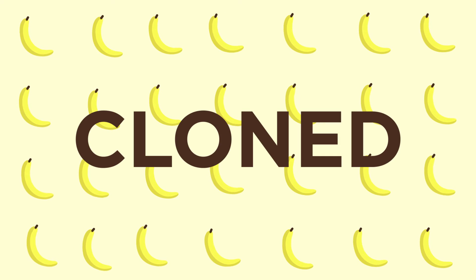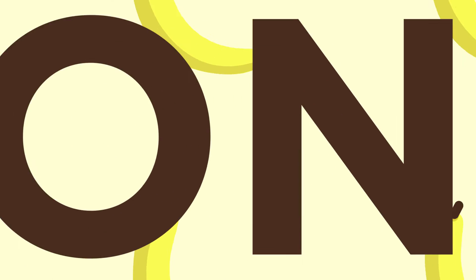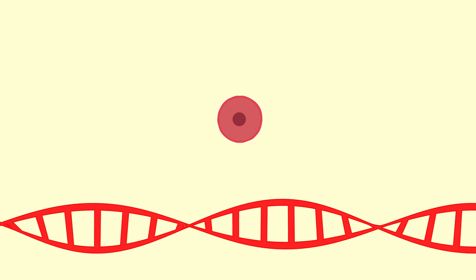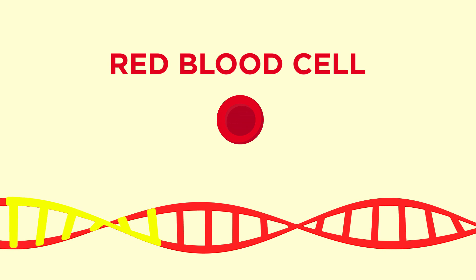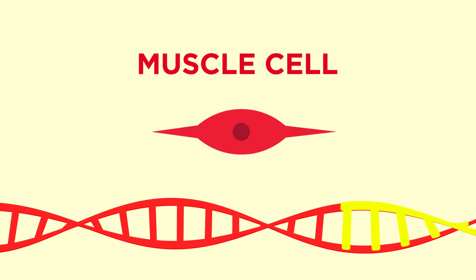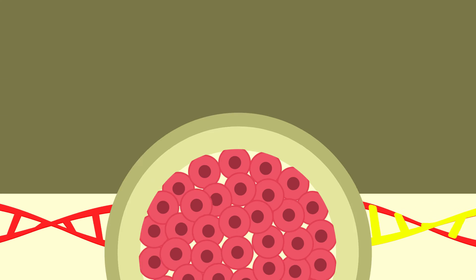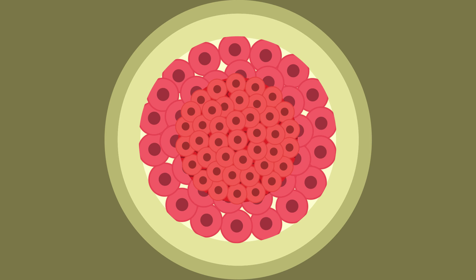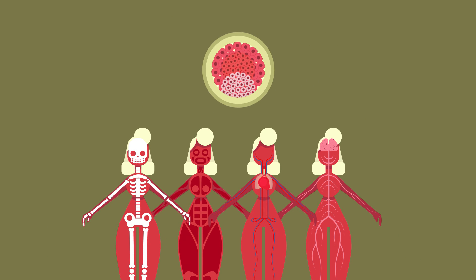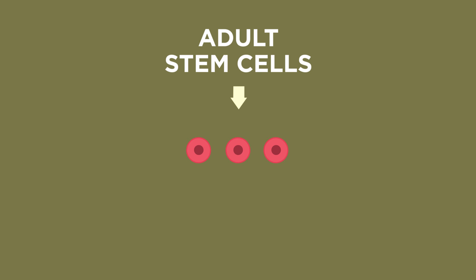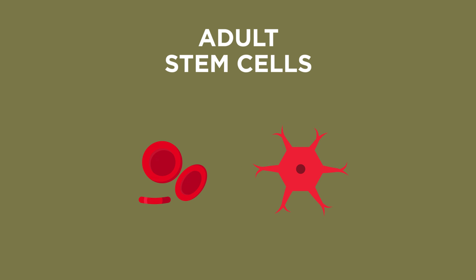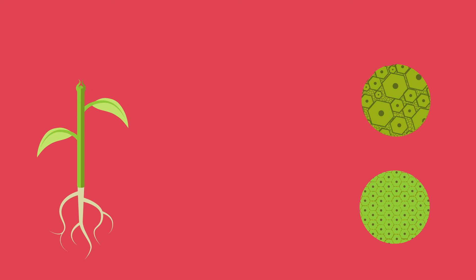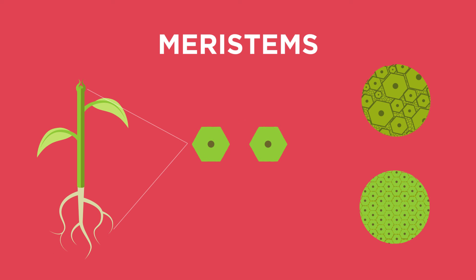In fact, nearly all commercial bananas sold in supermarkets around the world are from cloned banana plants. So to summarise, in this video we have discovered that genes are switched on and off to form differentiated cells. We have looked at how differentiation in human embryonic stem cells means all the different tissues and organs can be formed, and how adult stem cells can only differentiate into a few different types of cells. However, in plants, stem cells in meristem tissues can differentiate into all cell types throughout the life of the plant.